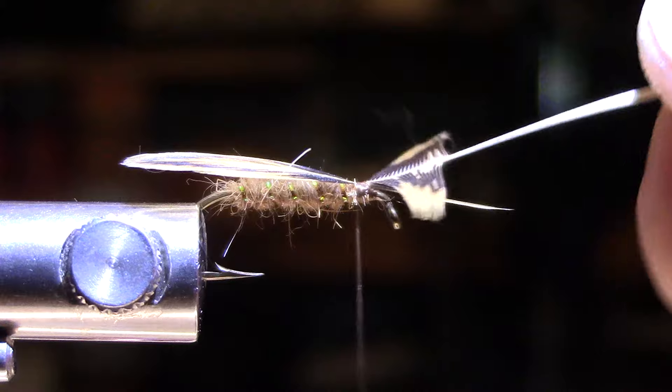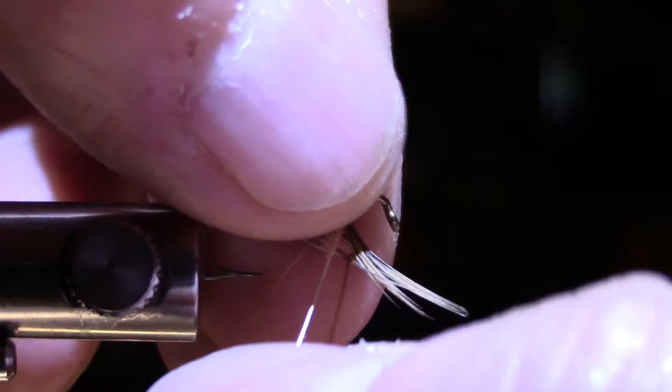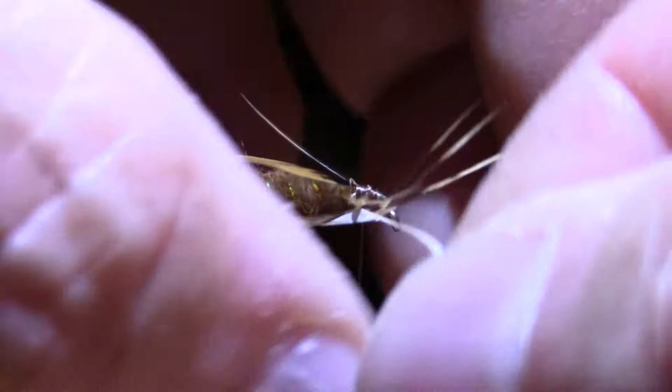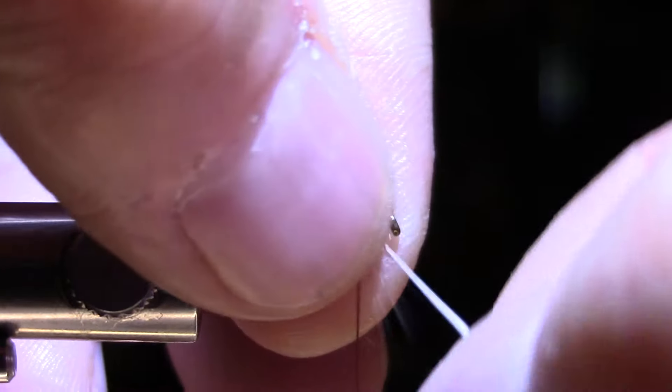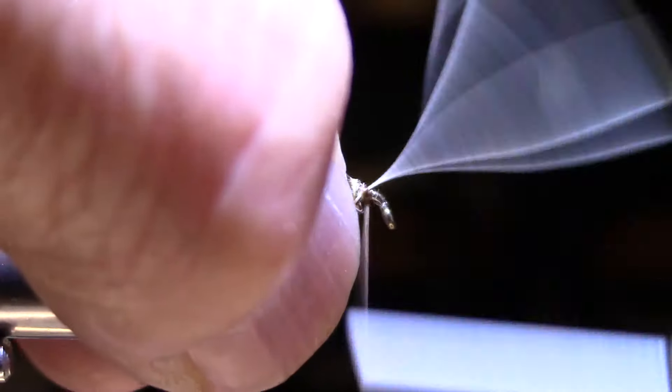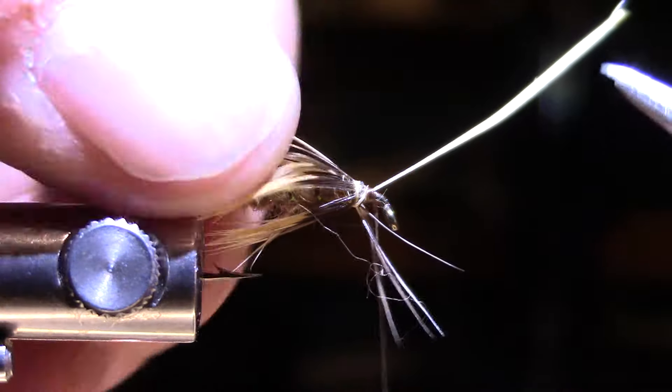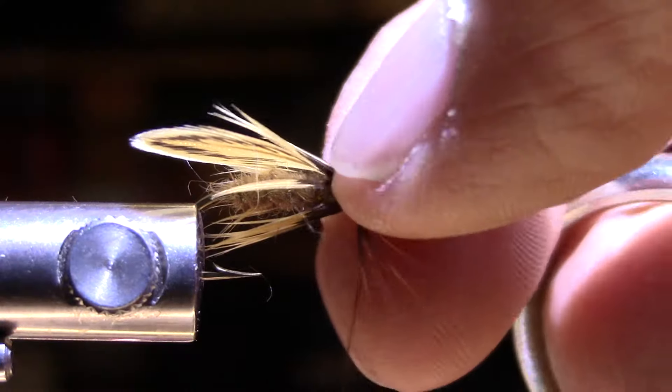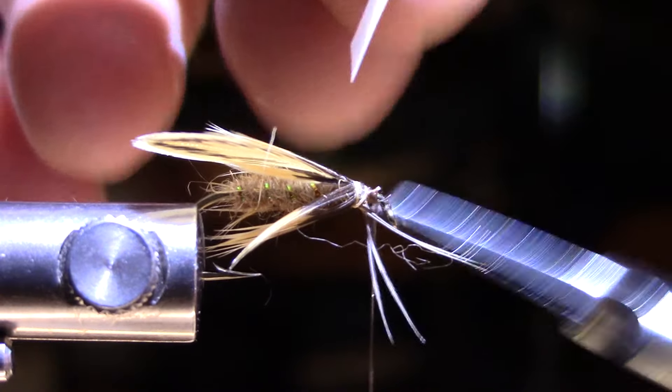Then I'm going to pick this up, sweep all this hackle back, and I want two wraps towards the eye of this fly. So there's one and there's two. So there we go, now we'll just pull those back and make sure that feather is still in the middle, looks good, and we'll clip that off.